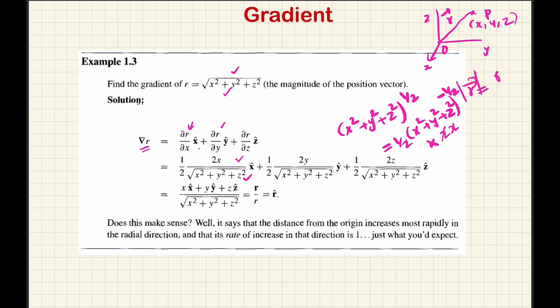Simplifying all terms, we get x x-cap plus y y-cap plus z z-cap divided by the square root of x squared plus y squared plus z squared. The numerator is the position vector R vector itself, and the denominator is R, the magnitude. So gradient of R equals R-vector divided by R, which is the unit vector along the direction of the position vector.